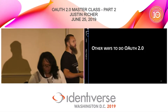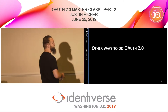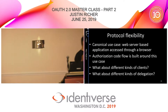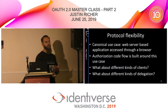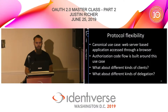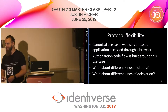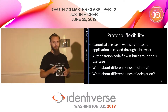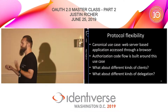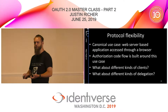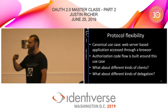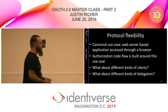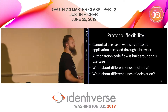We have looked at the authorization code flow, which is the most canonical way to do OAuth 2. But we also saw that there are a lot of modular parts with OAuth 2, and people have already been talking about the implicit grant, native applications, and all of these different variables. One of the goals with OAuth 2 was to build a system flexible enough to manage all of these different kinds of client applications and services, connecting them using the same core set of pieces and technologies.